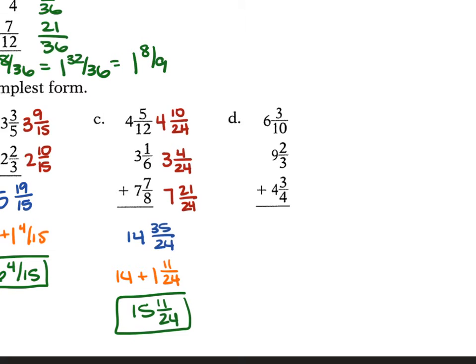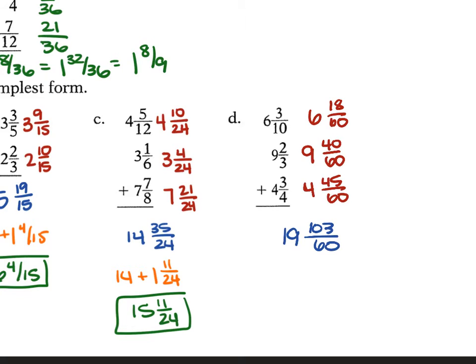For D, 6 and 3 tenths plus 9 and 2 thirds plus 4 and 3 fourths: LCD is 60, converting to 18 over 60, 40 over 60, and 45 over 60. Whole numbers: 6 plus 9 plus 4 is 19. Fractions: 18 plus 40 plus 45 is 103 over 60, which equals 1 and 43 over 60. Adding 19 plus 1 gives 20 and 43 over 60.